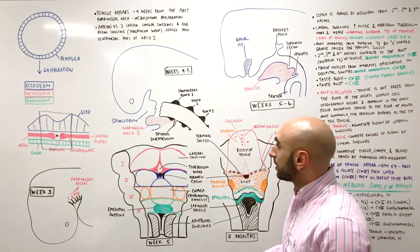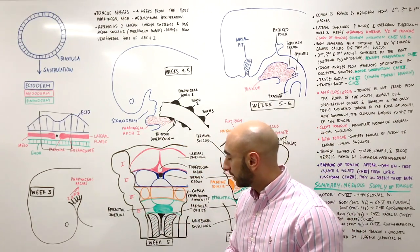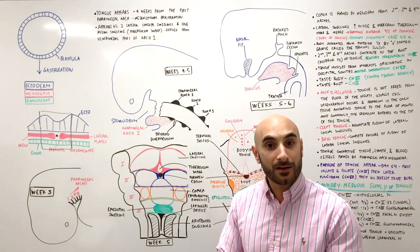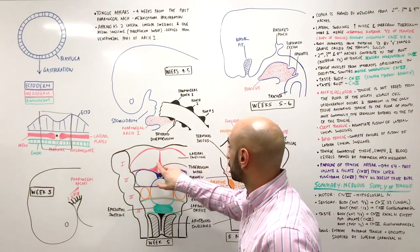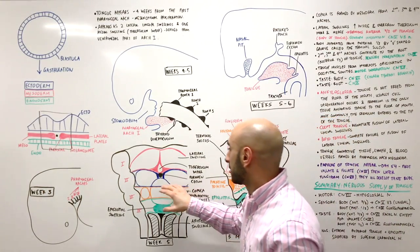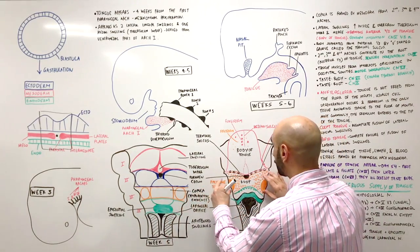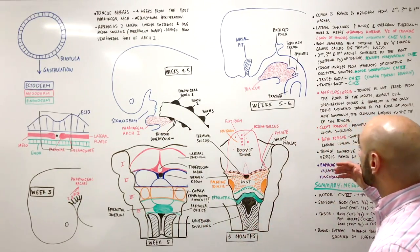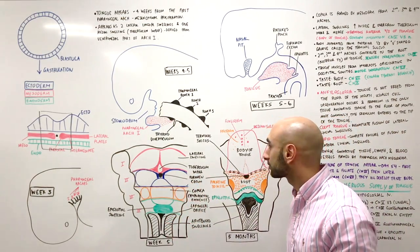To summarize: the tongue is mostly comprised of mesoderm — a combination of pharyngeal arch mesoderm from the first four pharyngeal arches. Pharyngeal arch one contributes the lateral swellings, forming the anterior two-thirds of the tongue. Pharyngeal arches two, three, and four help form the root of the tongue, the posterior third. Understanding this embryology allows you to understand which nerves innervate which part of the tongue.